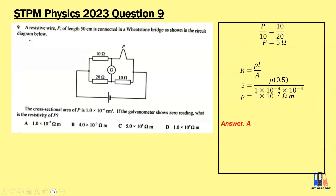In the 2023 question, a resistive wire P of length 50 cm is connected in a Wheatstone bridge. Given the cross-sectional area of P, and the galvanometer shows zero reading, what is the resistivity of P? Applying the ratio formula: P to 10 equals 10 to 20, so P has a resistance of 5 ohm. Then applying the formula R = ρL/A with all values gives the resistivity equal to 1 × 10⁻⁷ ohm·meter. Answer is A.